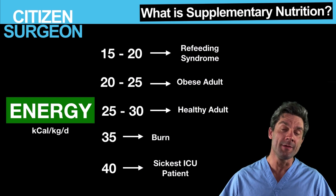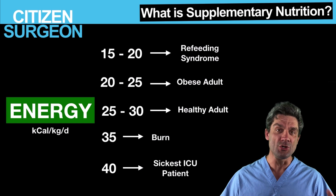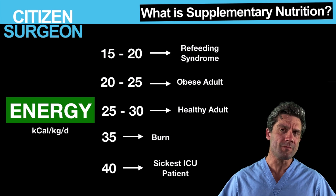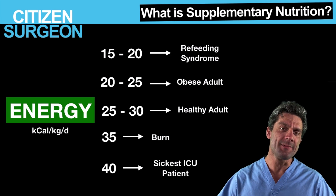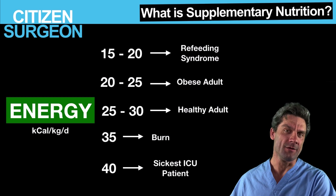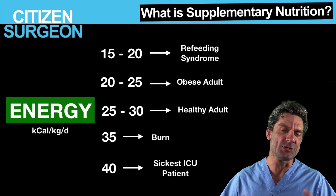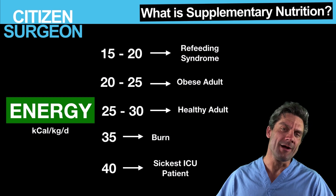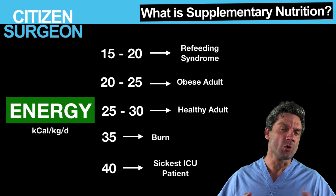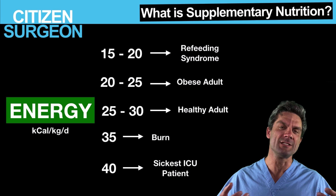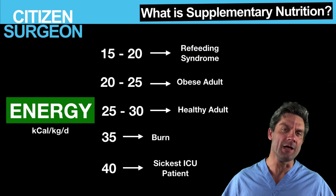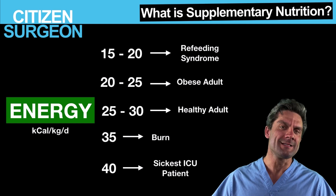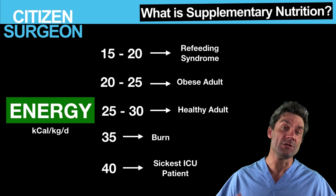Moving on from 15 to 20 up to 20 to 25 kilocalories per kilogram per day — this is the morbidly obese patient. As their BMI increases, they typically need fewer calories. Their resting energy expenditure is actually quite low, so these patients may require less than a person with a normal BMI, at least in the beginning.